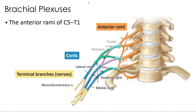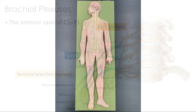The five major terminal branches are: the musculocutaneous nerve, which innervates the anterior upper arm muscles; the median nerve, which innervates the anterior forearm muscles; the ulnar nerve, which innervates the medial side of the anterior forearm; the axillary nerve, which innervates the deltoid and teres minor in the shoulder region; and the radial nerve, which innervates the posterior upper arm and posterior forearm muscles. Let's now review these components on our flatman model.